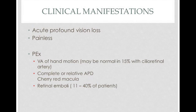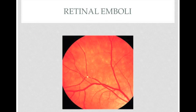These patients will come in and present with acute profound vision loss. It is painless, and the vision could be as bad as just being able to detect hand motion. However, as discussed earlier, if they have a cilioretinal artery assisting the retina, visual acuity could be normal in about 15% of cases. They can have complete or relative afferent pupillary defect, a cherry red macula — which is a classic buzzword — and a retinal emboli can actually be visualized in 11 to 40% of patients on fundoscopic exam.